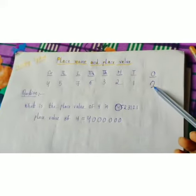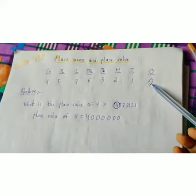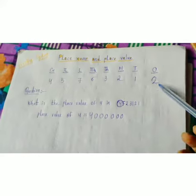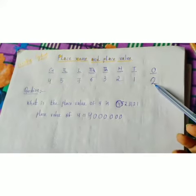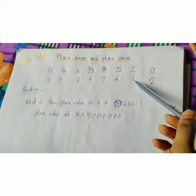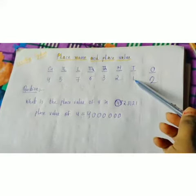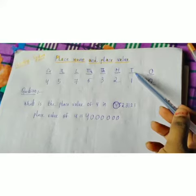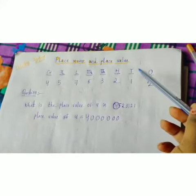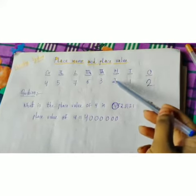So, two is in which place? One's place. So, the place value of two will be two. One is in which place? Tens place. So, the place value of one will be ten.